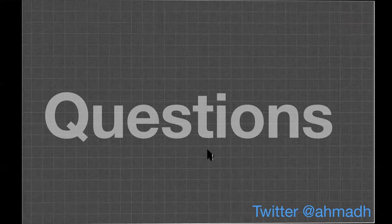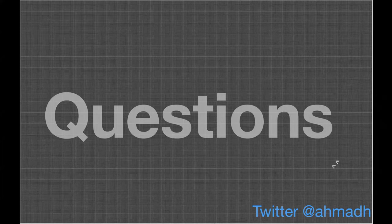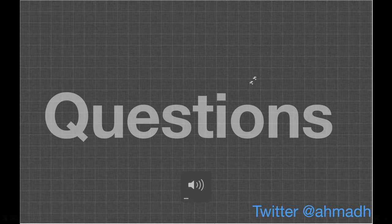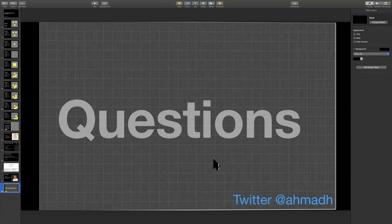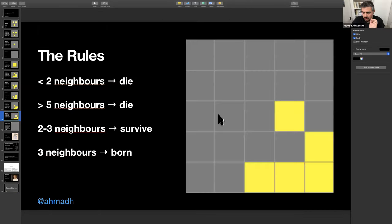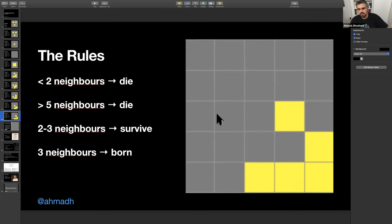Question from Haider: are you applying the rules based on the previous state and not switching tiles from top to bottom? Yes — you decide the fate of each tile based on the current generation, then switch the whole grid at once.